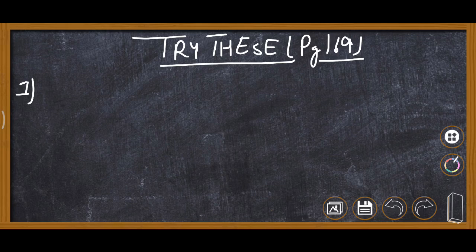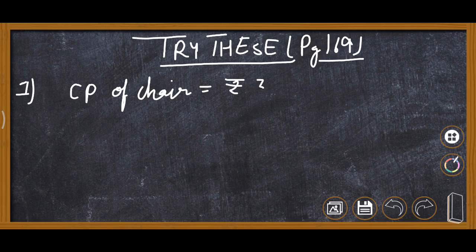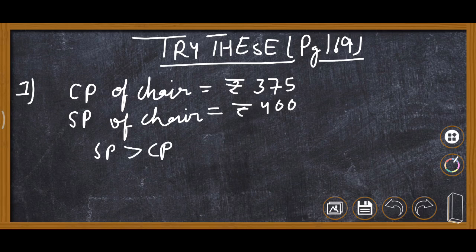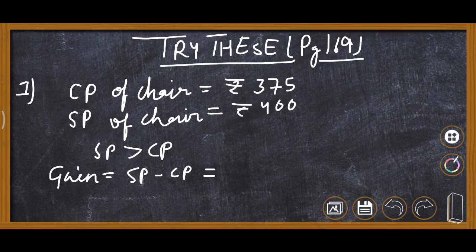The shopkeeper bought a chair for rupees 375 — this is the cost price. He sold it for rupees 400 — this is the selling price. We can see that SP is greater than CP, so there is definitely gain or profit. Formula of gain is SP minus CP, so: 400 minus 375 = rupees 25.